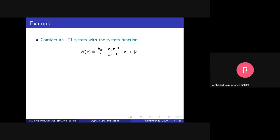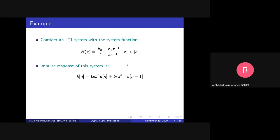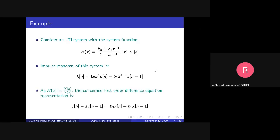Consider an LTI system with a system function H(z) = Y(z) / X(z). The impulse response for this system can be expanded as b0 / (1 - a*z^(-1)) plus b1*z^(-1) / (1 - a*z^(-1)), with the corresponding ROC. Applying the inverse z-transform gives the impulse response. We can rewrite this in the form of a difference equation by cross-multiplying Y(z) and X(z).